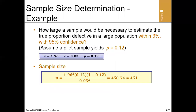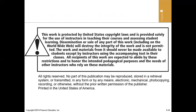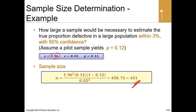Example: How large a sample is necessary to estimate the true proportion defective in a large population within three percent with 95% confidence, assuming a pilot study yields a proportion of 0.12? Here, p = 0.12, z = 1.96 for 95% confidence, and the margin of error e = 0.03. Substituting into the formula gives a required sample size of 451.